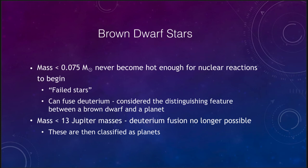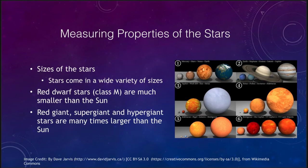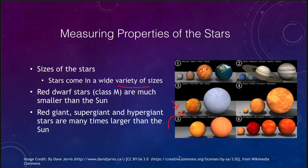Stars come in a wide variety of sizes. Looking at ordinary stars, typical stars can be much smaller than the sun. Here in this figure we have Jupiter, and a very small star like Wolf 359, which is a small red dwarf star significantly smaller than the sun — in fact much closer in size to Jupiter than it is to the sun.